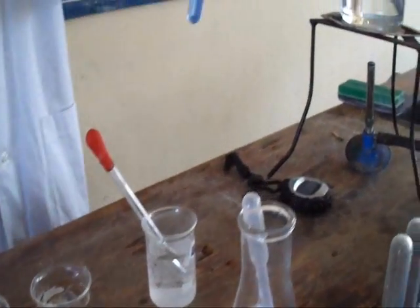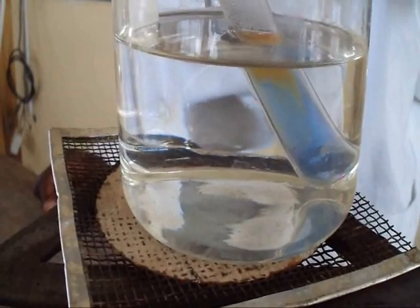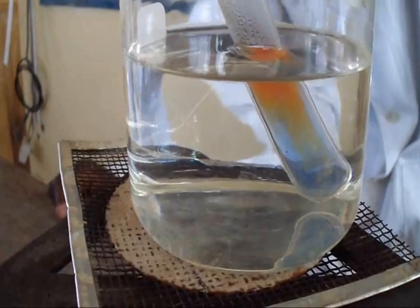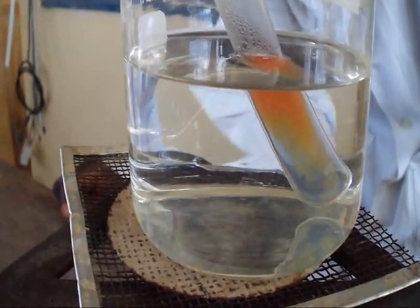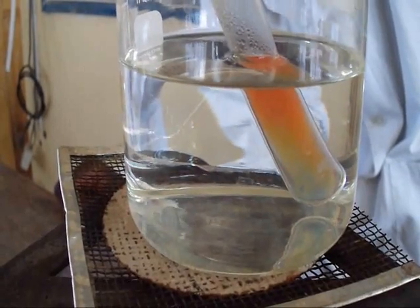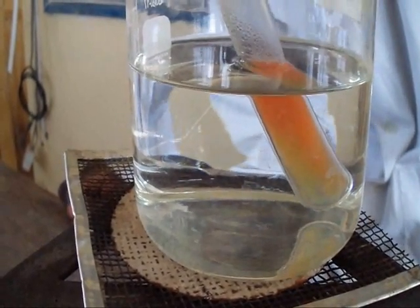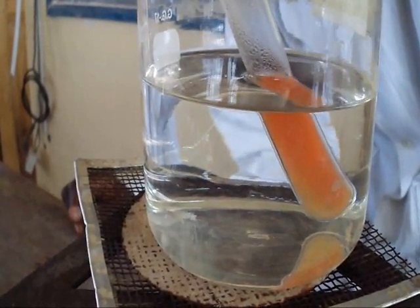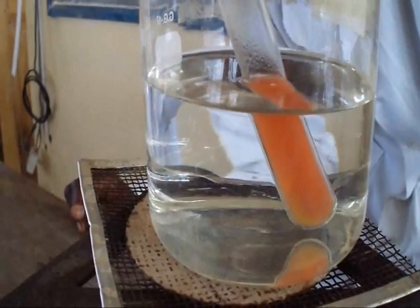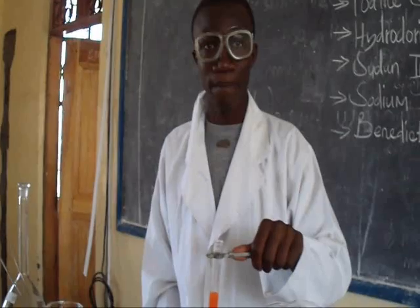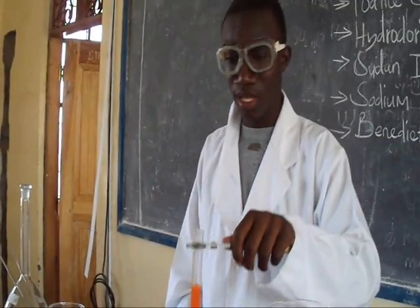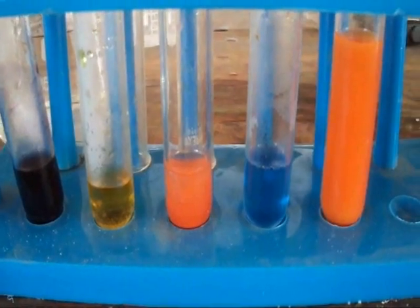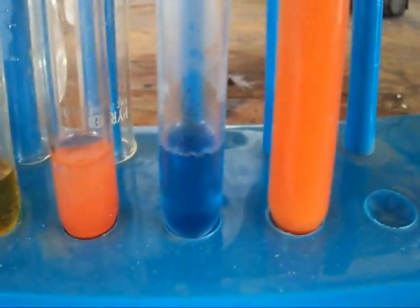Lastly, it should be warmed. As we see, the solution turns its colour to brick green, then forming a yellow colour, and finally it changes to brick red or orange. This confirms that food substance N contains non-reducing sugar, as shown by the observation.